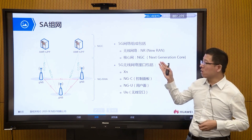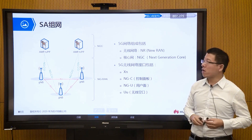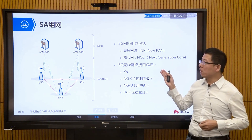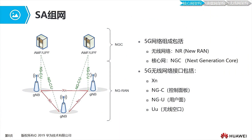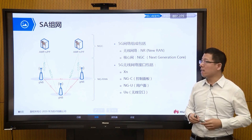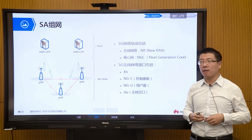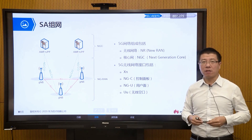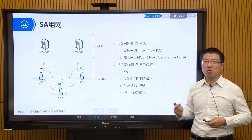In the 5G core network, we have different network functions deployed on virtual machines, which are ultimately deployed on x86 servers. Here are two examples: one is called AMF — Access and Mobility Management Function — which is similar to our control plane, processing control plane signaling in the core network. The other is UPF — User Plane Function — which handles user data forwarding and processing.